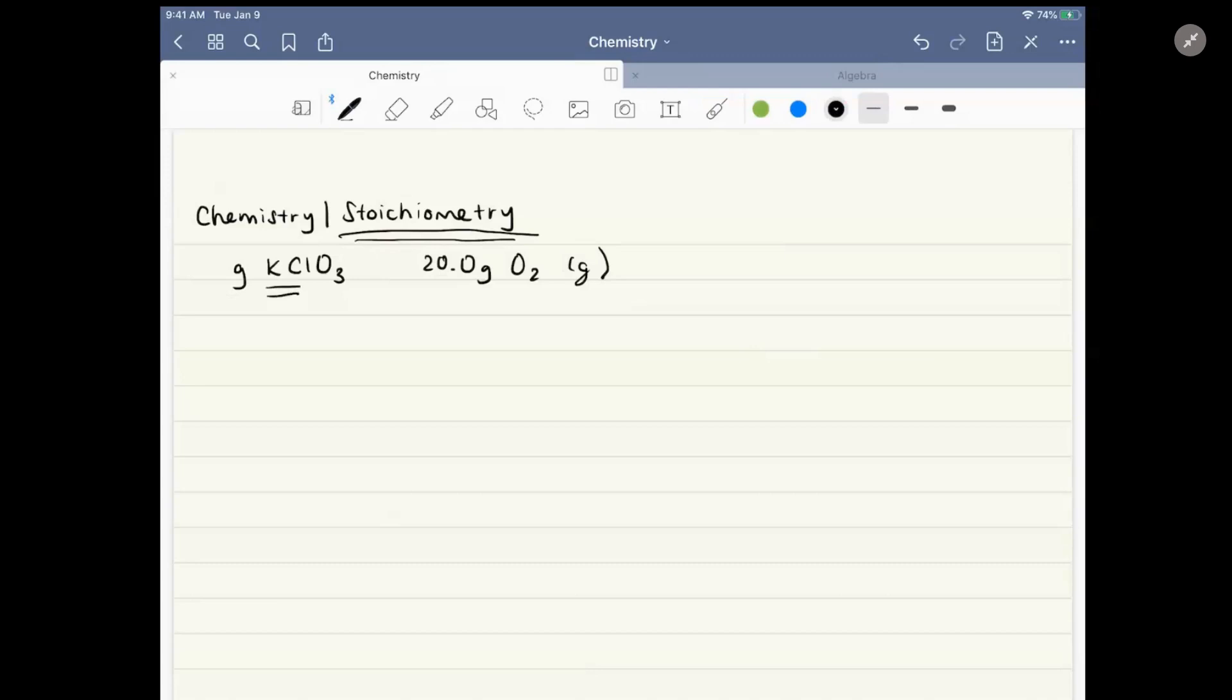Since it doesn't really matter the identity of these two, I'll just write out the unbalanced equation. So we have KClO3 goes to O2 gas. And now we want to go ahead and balance this. We also have K and Cl out here somewhere. Maybe it'll be aqueous. Doesn't really matter right now.